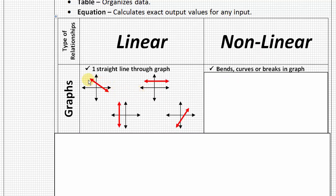Like I said, it doesn't matter what direction it's going as long as it's a straight line through the graph. So, all four of these are examples of linear relationships.